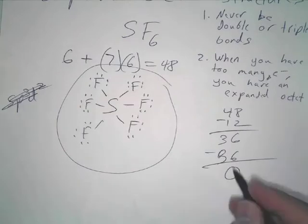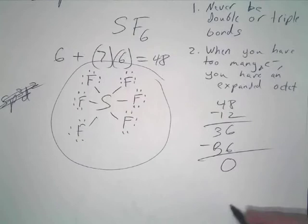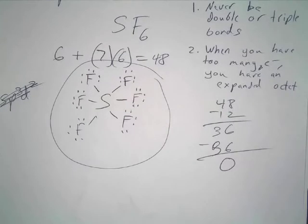Now, if we had more electrons left over, like if we had two, you would just add them to the central atom, which I will show you an example of tomorrow. That's it.